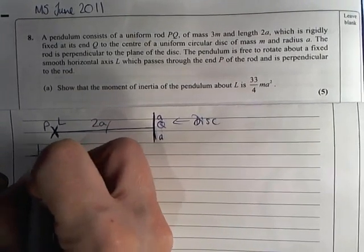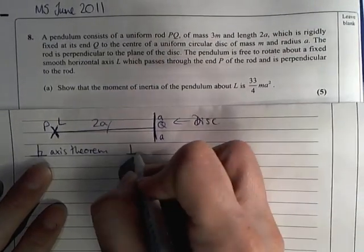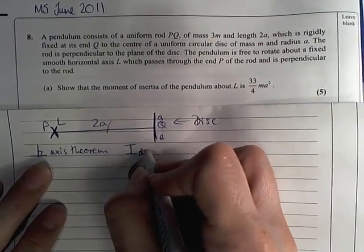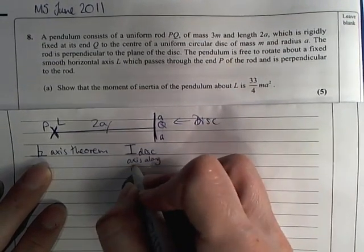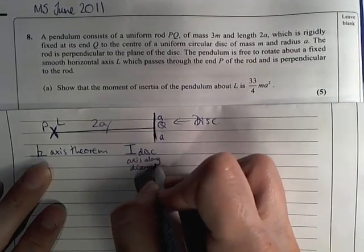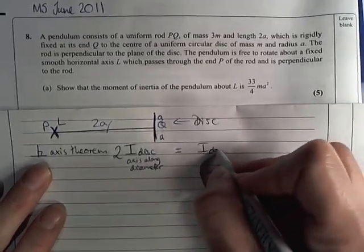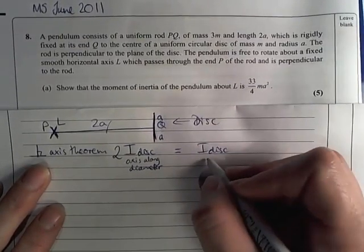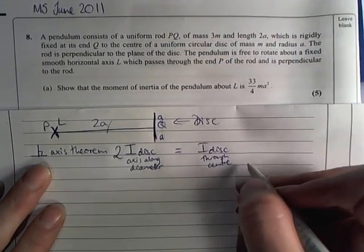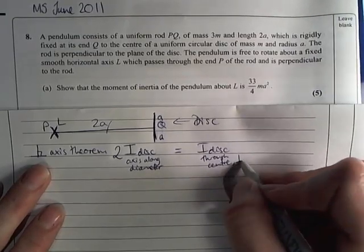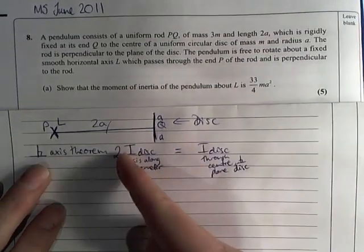Using the perpendicular axis theorem, the I of the disk axis along diameter times two makes the I of a disk through center which is perpendicular to the plane of the disk.